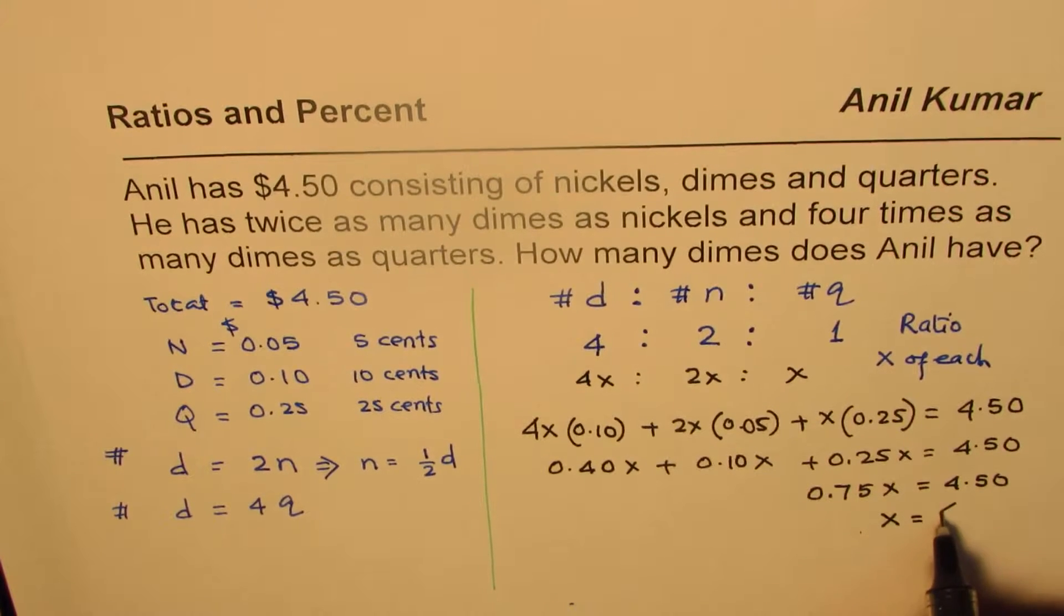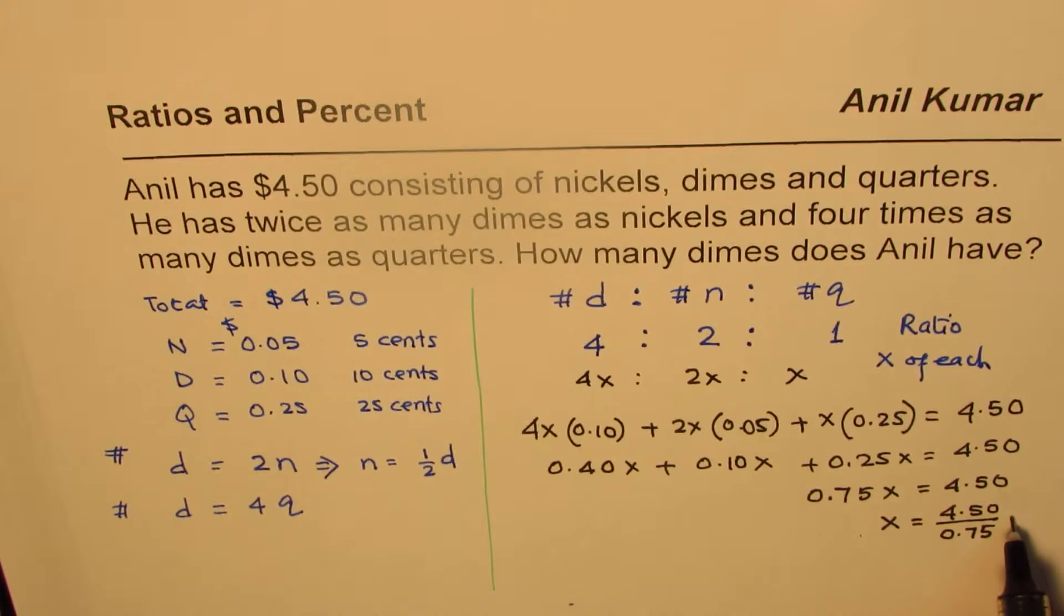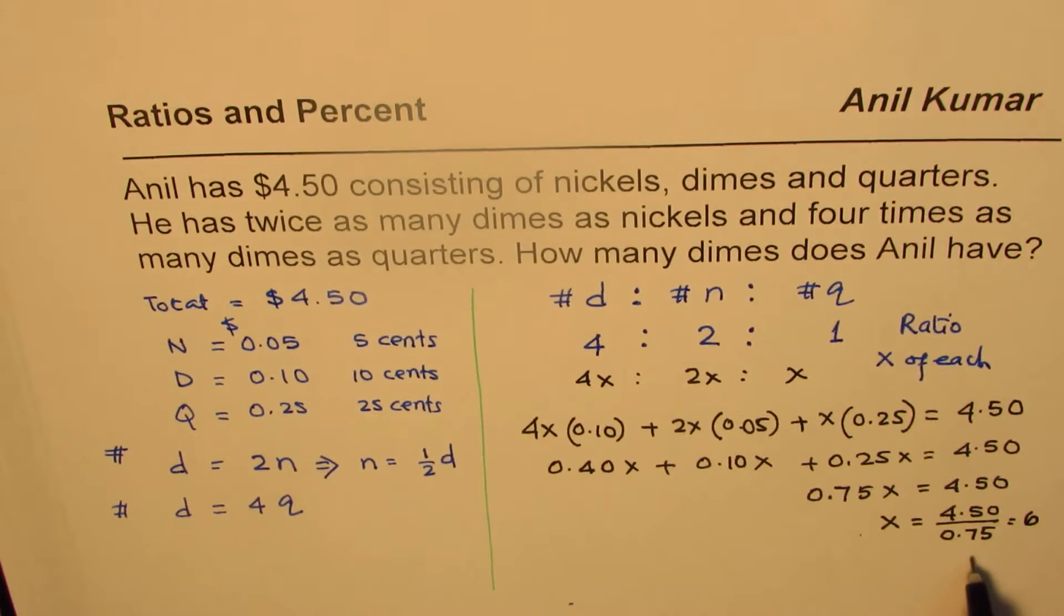So from here, we can calculate x as 4.50 divided by 0.75. You can actually use the calculator at this stage and find what is 4.50 divided by 0.75. So 0.75 times 2 is 1.5, and then if you double it, it is 3. 1.5 gives us a value of 6, approximately. 6 times 5 is 30. 6 times 7 is 42. 42 plus 3 is 45. So we get 4.50. So x value is 6 for us.